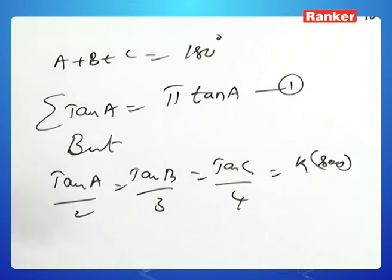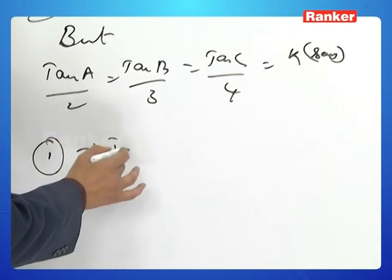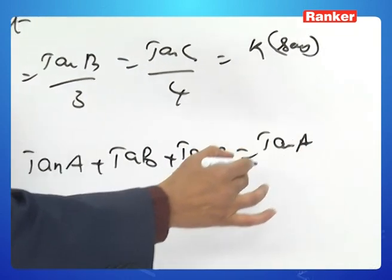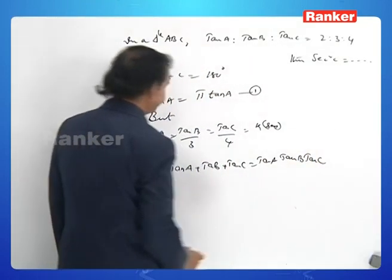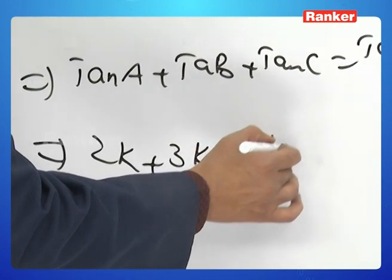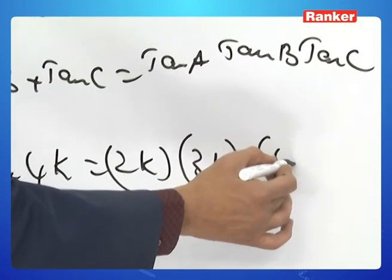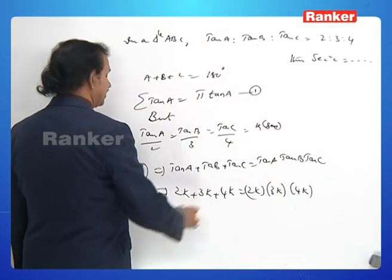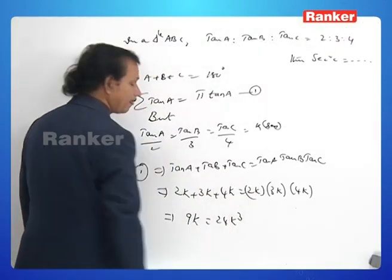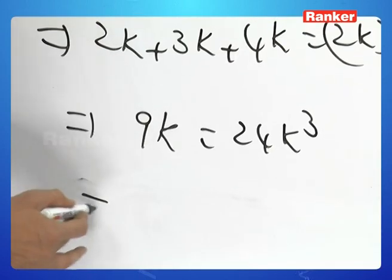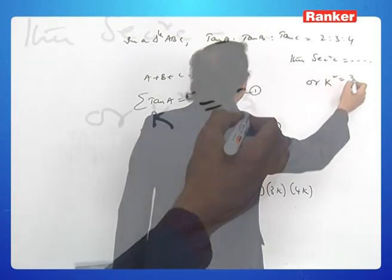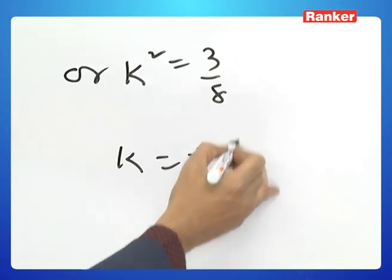Substituting into the identity: tan A + tan B + tan C = tan A · tan B · tan C gives 2k + 3k + 4k = 2k · 3k · 4k, so 9k = 24k³. Cancel k: 9 = 24k², so k² = 3/8.